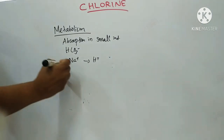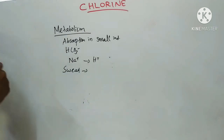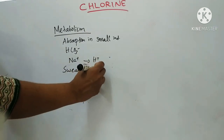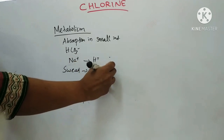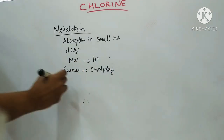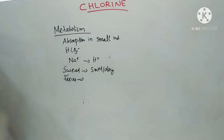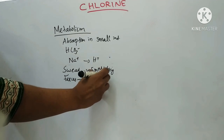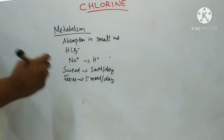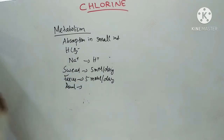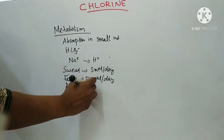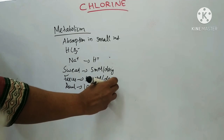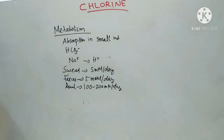Coming to excretion: in sweat, excretion is about 5 millimole per day. In faeces, it is about 5 millimole per day. In renal excretion, it is about 100 to 200 millimole per day. 99% of chloride in the glomerular filtrate is reabsorbed by renal tubules.